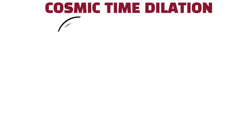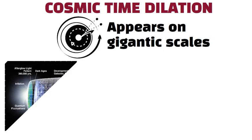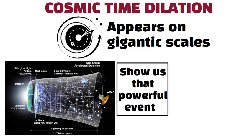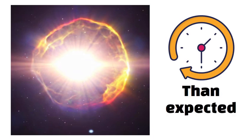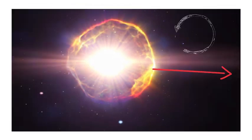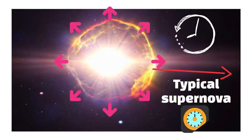Cosmic time dilation. Time dilation even appears on gigantic scales. Distant galaxies in the expanding universe show us that powerful events, like supernova explosions, last longer than expected. The explosion's light is stretched out over time by cosmic expansion, making a typical supernova appear to fade more slowly.